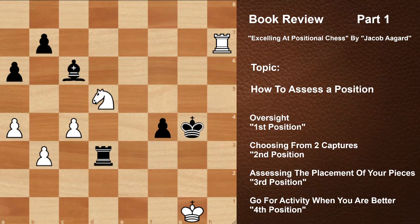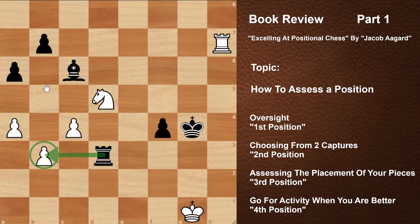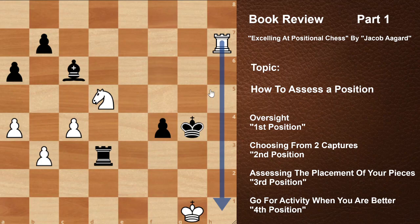We move to our next position. This game was played between Jacksland versus Aagaard in Denmark 1995 — Jacob Aagaard was playing Black. Here you have two options: you can capture the knight, and after the pawn recaptures you can capture the pawn, or you can immediately go and capture the pawn. Pause and think — what is the best capture?